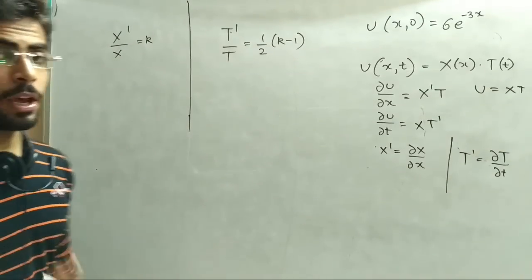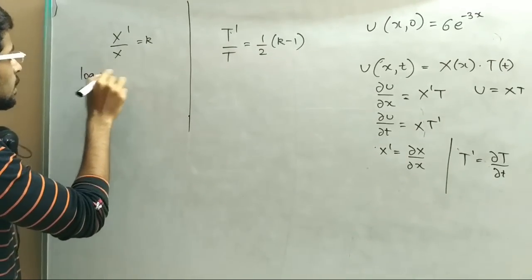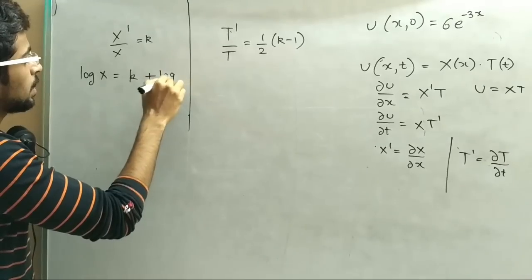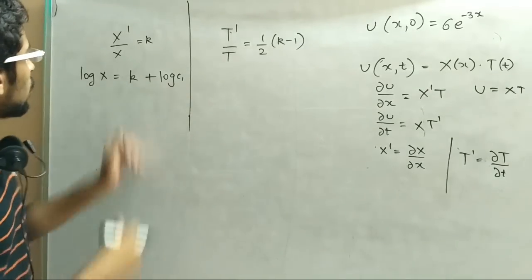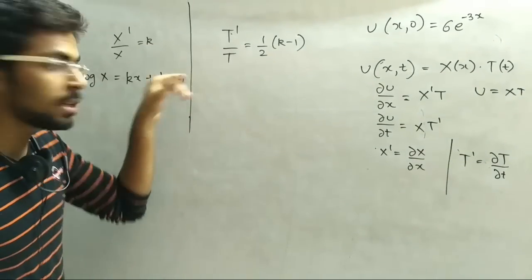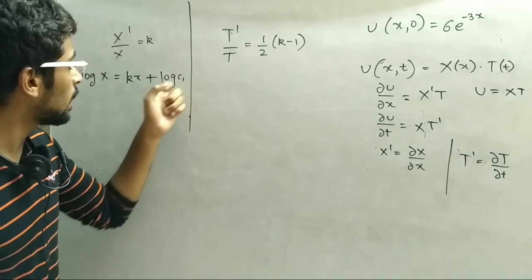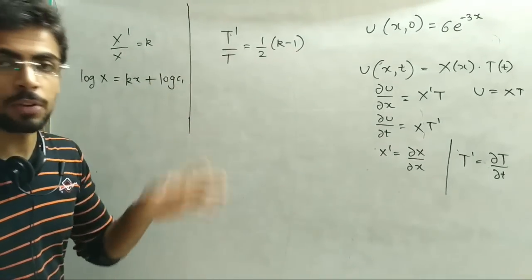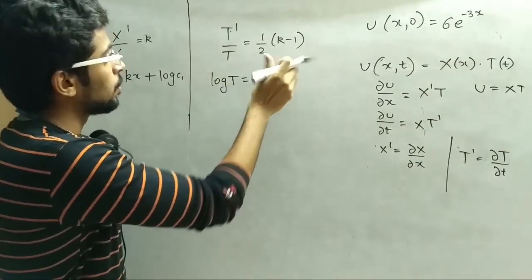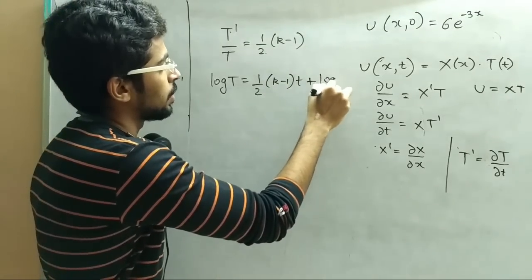I mean time base nahi karunga integration, I hope you all know how to take integration. When I take integration, the answer is: log of X equals to kx plus log of c1. Okay, k ka ho jayega kx and log of c1 - constant c1. For the sake of solving, maine yahan pe log liya hai c1 ke saath. And for the T equation: log of T equals to one half (k minus 1) times t plus log of c2.